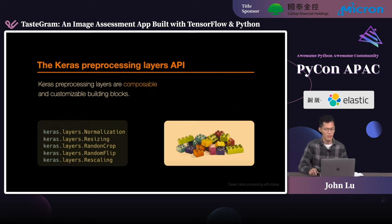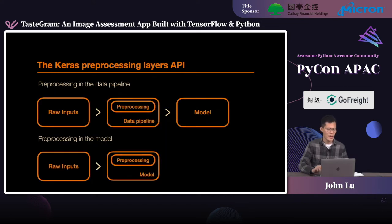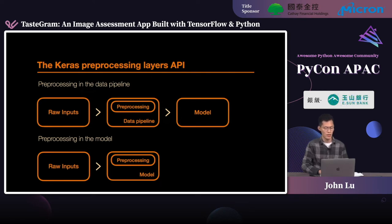The Keras preprocessing layers APIs are designed to address this challenge. Keras preprocessing layers are modular building blocks that encapsulate common preprocessing steps, such as resizing, rescaling, random cropping, and so on. The API enables you to place preprocessing computation either in your data pipeline or directly into your model, creating end-to-end models capable of processing raw inputs such as images or text. These models can be deployed as-is. You don't have to implement your own preprocessing logic when deploying in new environments, because the preprocessing logic is part of the model itself — guaranteeing the same logic in production as during training.